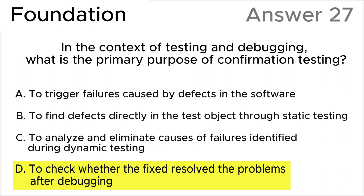The correct answer is D: To check whether the fixer resolved the problems after debugging. According to the ISTQB syllabus and ISTQB glossary, this answer is based on the understanding that confirmation testing is retesting to check if the bug or failure has been fixed after debugging.